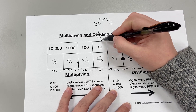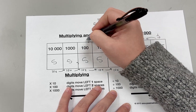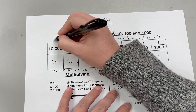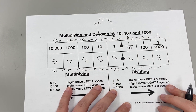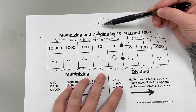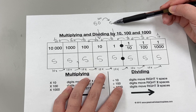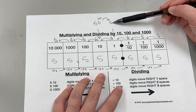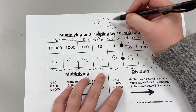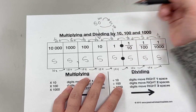The five in the tens place is one-tenth smaller than the five in the hundreds, and so on and so forth. The value of the five in the tens place is 50. The value of the five in the ones place is five. Comparing the five in the ones to the five in the tens: the five in the ones is one-tenth smaller than the five in the tens, and the five in the tens place is ten times bigger than the five in the ones.